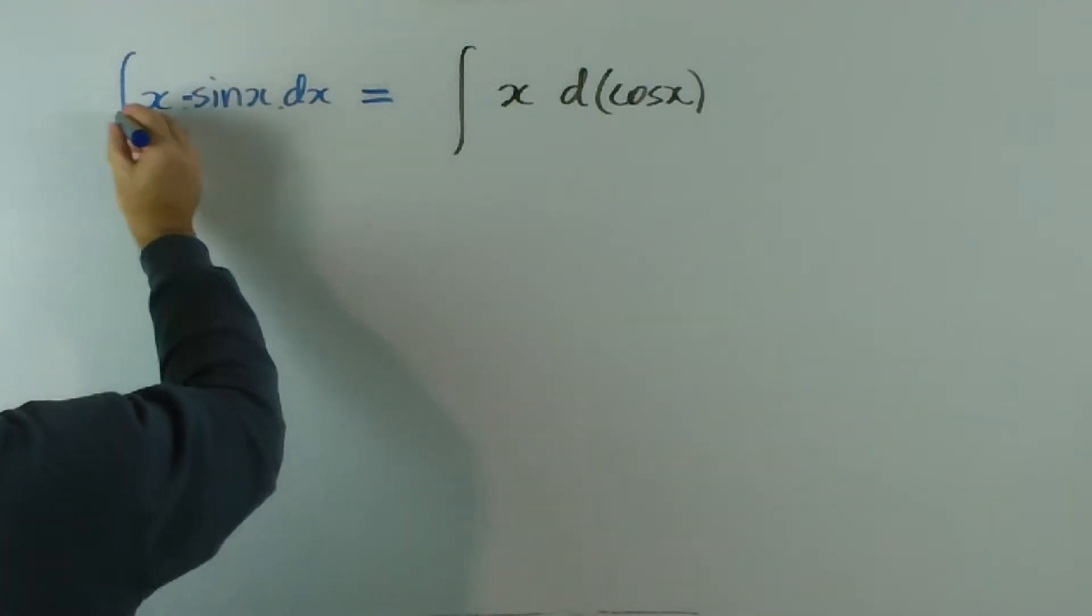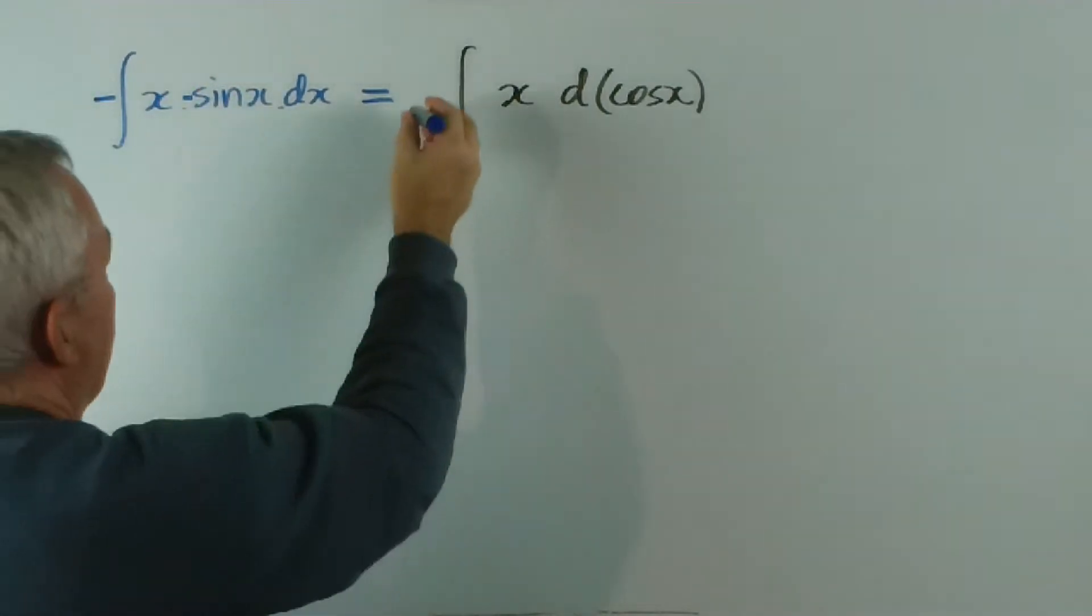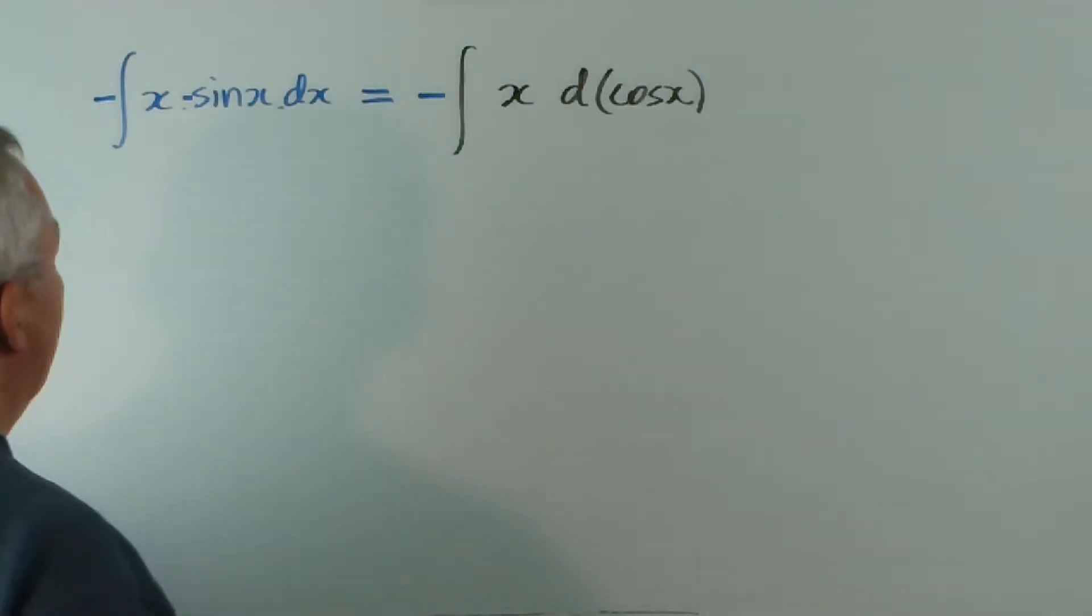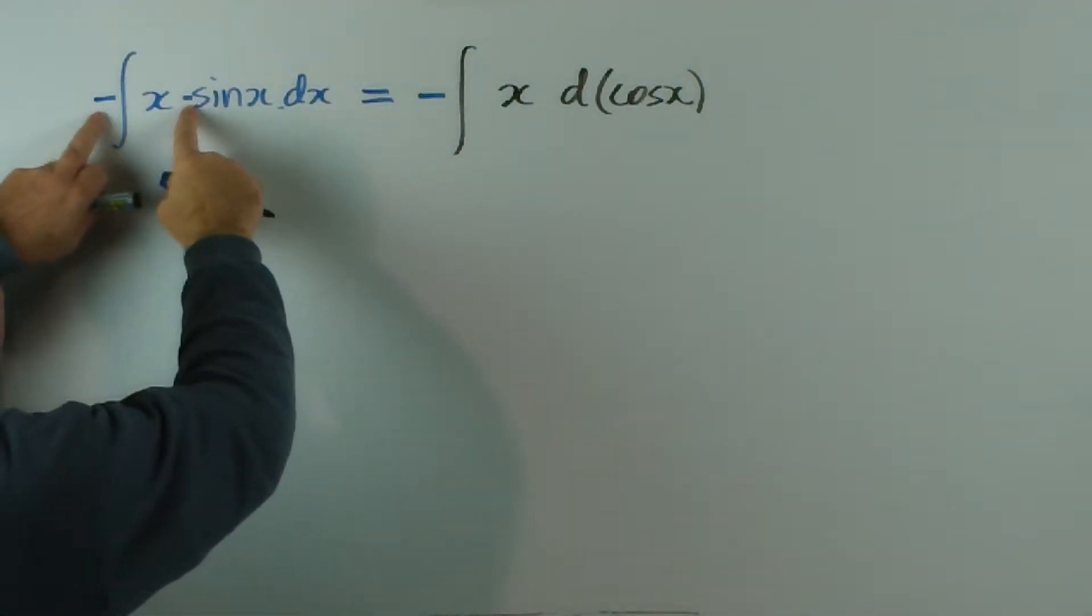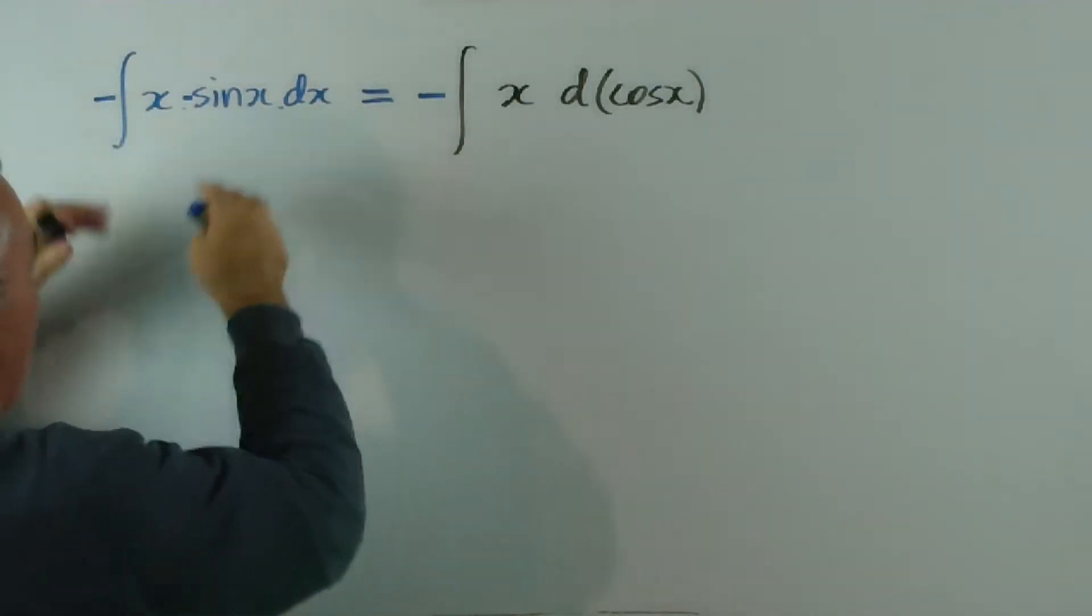So, to have a negative sign here, I would need a negative out the front, and therefore, a negative out the front of that. So, these two negative signs produce a positive and leave that integral unchanged.